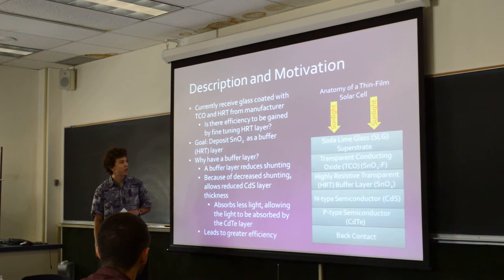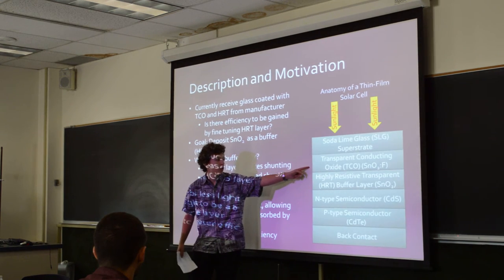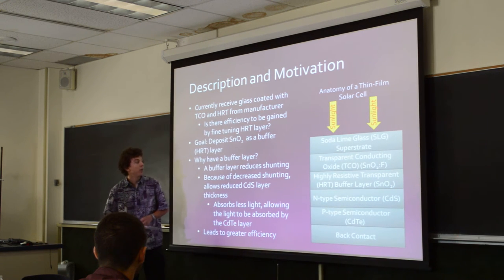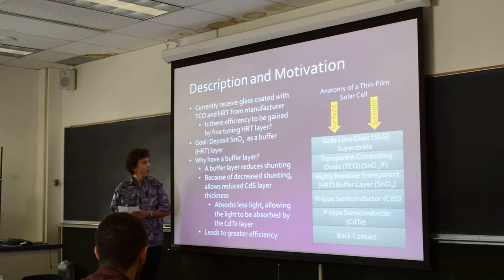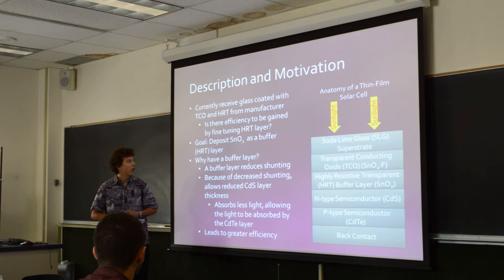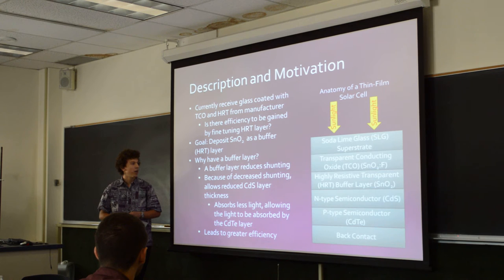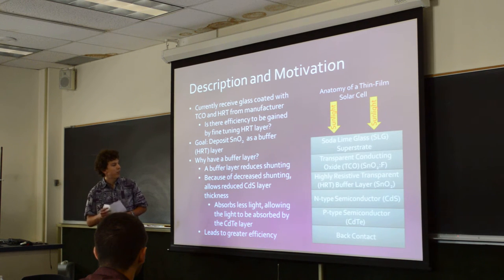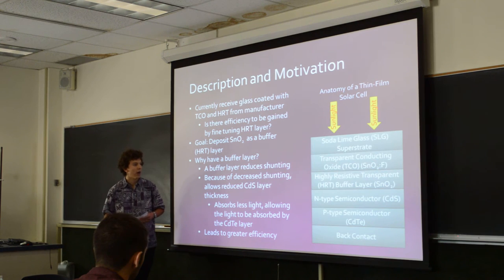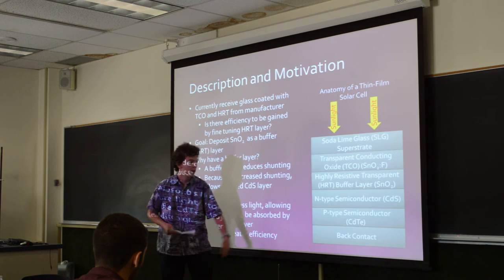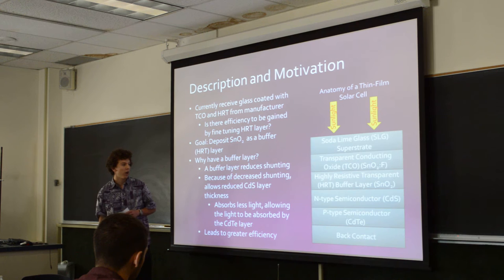We currently receive glass coated already with these two first layers — the transparent conducting oxide and the highly resistant transparent buffer layer. The question is: can we grow our own HRT and then by tuning it to our needs get a boost in efficiency? Our goal is to deposit tin oxide as our HRT layer. We need a buffer layer because it reduces shunting from copper diffusing towards the transparent conducting oxide. Once we decrease the shunting through our buffer layer, we can decrease the thickness of our cadmium sulfide, which allows light to penetrate further into our absorbing P-type semiconductor layer. With more light hitting our cadmium telluride, we can get a boost in efficiency.